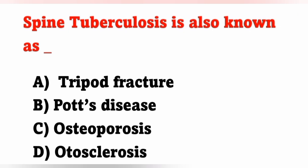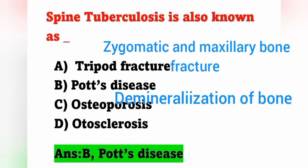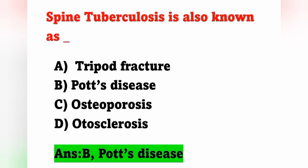Next question: Spine tuberculosis or spine TB is also known as — options: option A, tripod fracture; option B, Pott's disease; option C, osteoporosis; option D, osteosclerosis. Spine TB is known as Pott's disease — option B is the correct answer. Tripod fracture refers to a fracture of the zygomatic and maxillary bone. Osteoporosis means demineralization of bone causing loss of calcium and phosphorus leading to fragile, brittle bones. Osteosclerosis is a disease of the middle ear resulting in bony overgrowth of the tissue surrounding the ear.